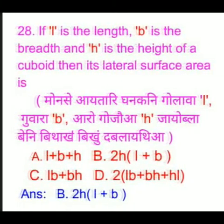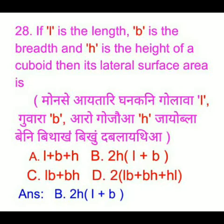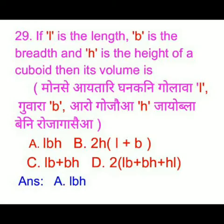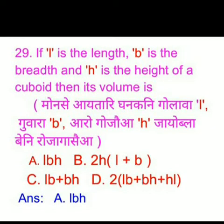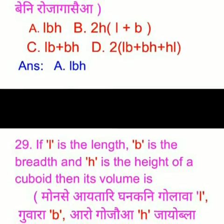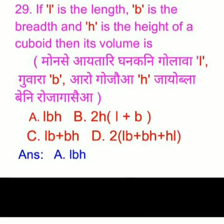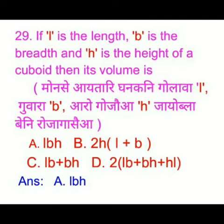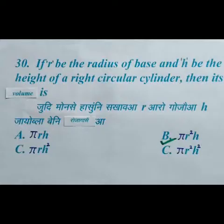the right answer is option B: 2H into (L plus B). If L is the length, B is the breadth, and H is the height of a cuboid, then its volume — we have four options and the right answer is option A: L into B into H.